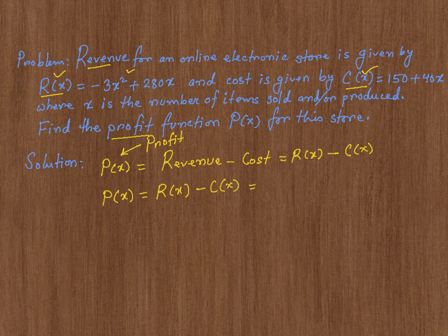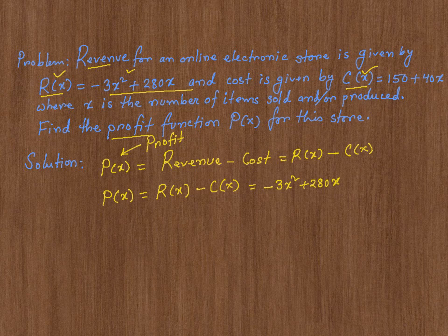And we are given that R(x) is -3x² + 280x. Then from that, we need to subtract the cost function, which is 150 + 40x.